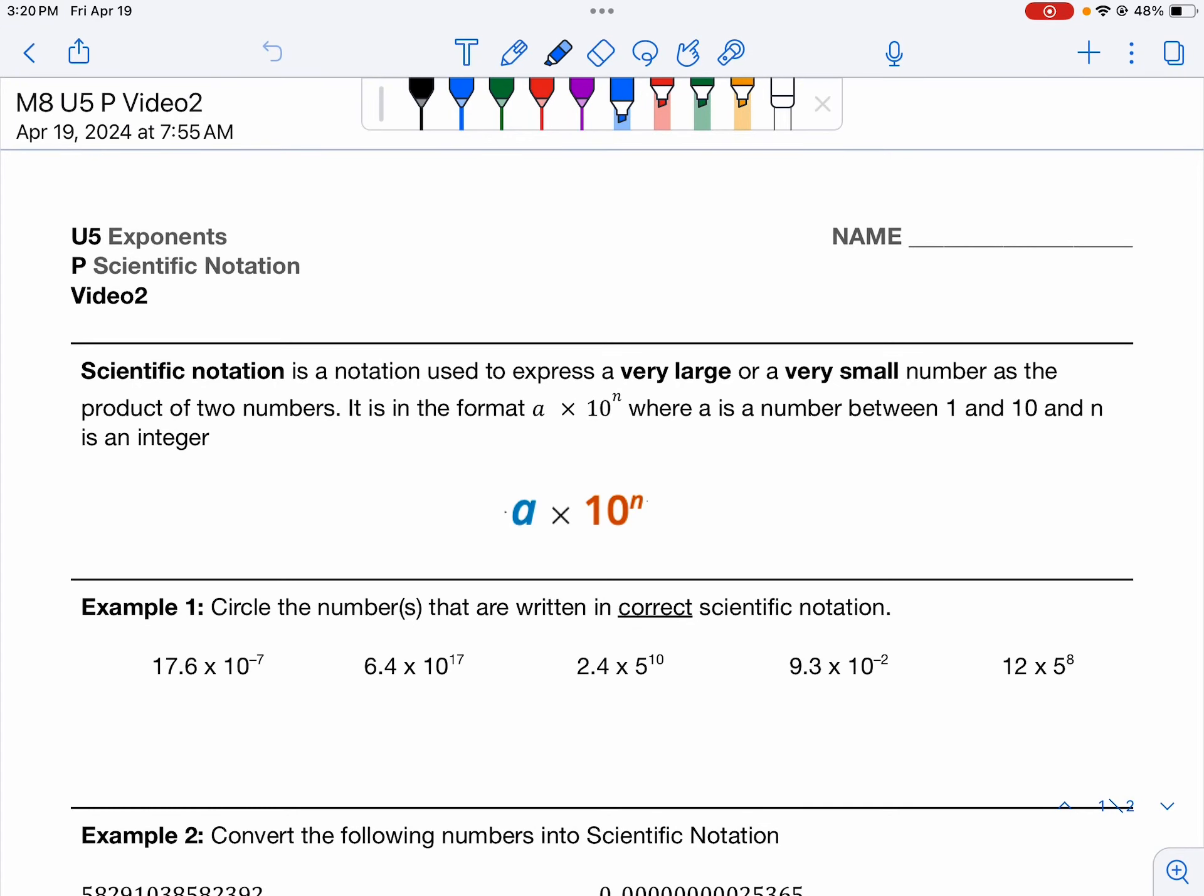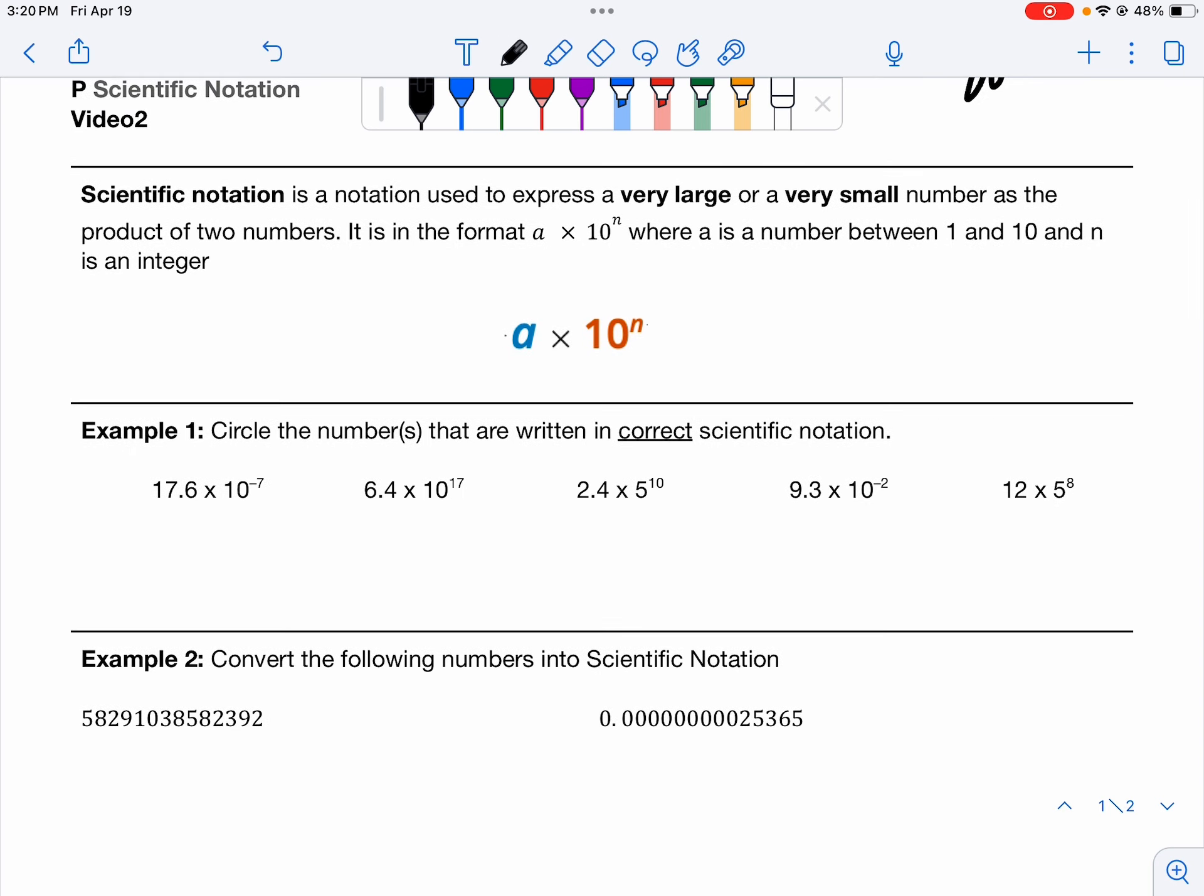All right, hello and welcome to this video, which is a quick review of scientific notation. This is the P-Standard Scientific Notation Video 2. Remember, scientific notation is notation used to express very large or very small numbers as the product of two numbers.